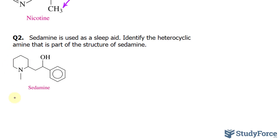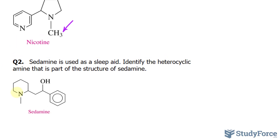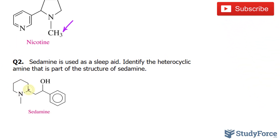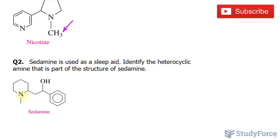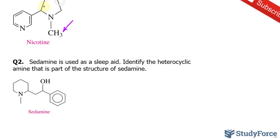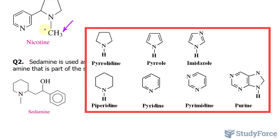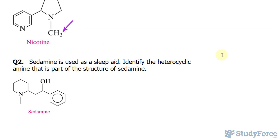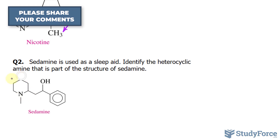Let's begin over here. It's not the same as before. Notice that we have one, two, three, four, five, six atoms around this ring, whereas over here we had five. From the chart, you can see that this is called pyridine. And nowhere else in this molecule do we see any more nitrogens, so there are no other heterocyclic amines anywhere else in this molecule except for this part right here.